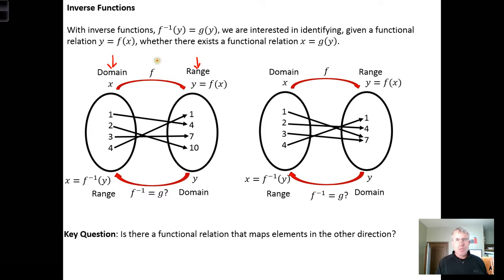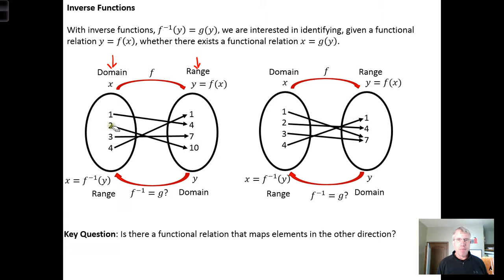We know that each of these are functions because for each of them, each input — the numbers 1 through 4 — is associated with exactly one output. So we don't see any input that's mapped to more than one output, and that's how we know that we have a function. Similarly, over here, this relationship is a function because each input maps to exactly one output.